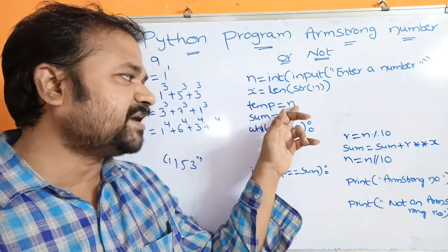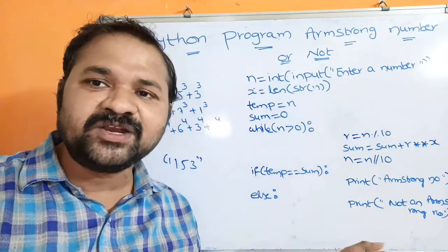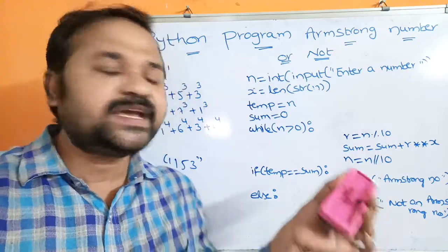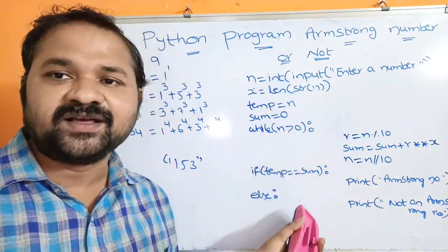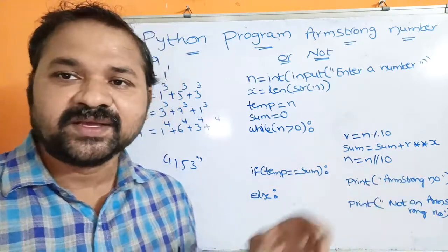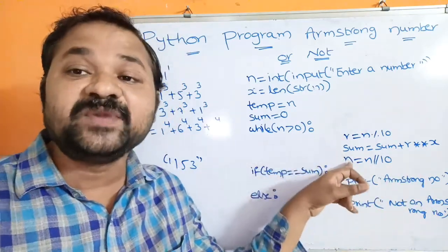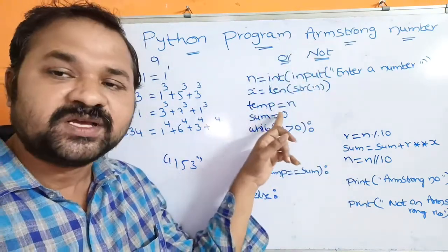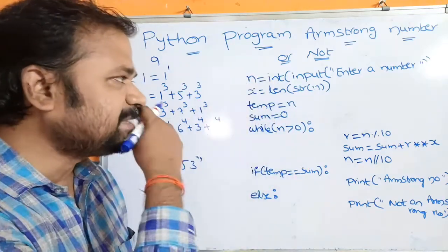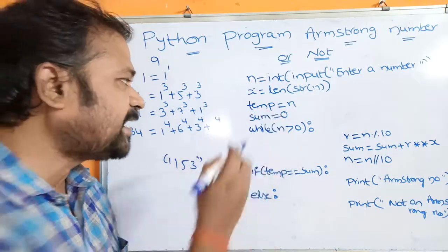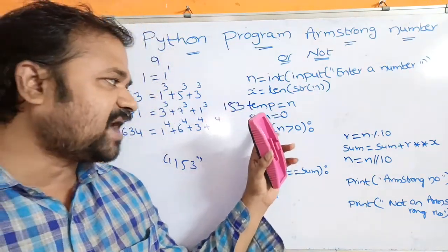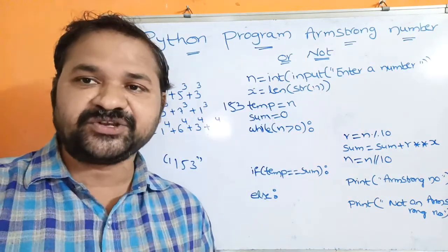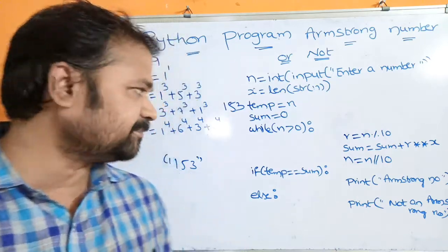Next, temp is equal to n. We need to store n in a temporary variable because the while loop runs as long as n is greater than 0, and whenever n becomes 0 the loop exits. So before entering the while loop, we store n in temp. Let's assume we entered 153, so temp contains 153. We also initialize sum to 0, since 0 plus anything equals that value.